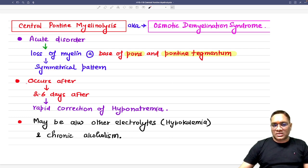And this event will occur after 2 to 6 days after rapid overcorrection of hyponatremia. So what we need to remember: after 2 to 6 days, when you have done rapid overcorrection of the hyponatremia, there will be osmotic damage of the myelin sheath in this pons and pontine tegmentum. But here what we need to remember is that it is not only with sodium, it may be associated with other electrolytes also like hypokalemia and it can also be associated with chronic alcoholism.